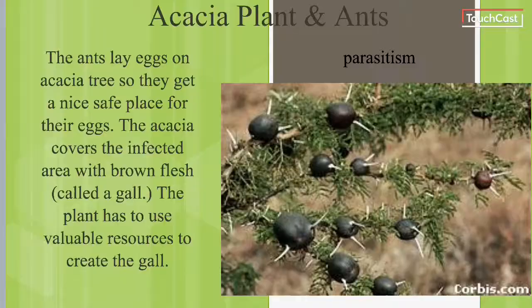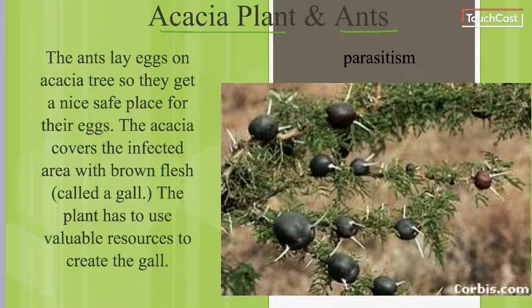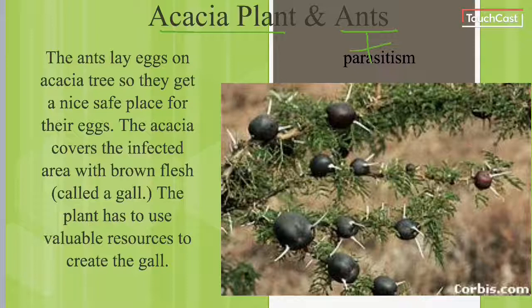Let's look at the acacia plant and ants. The ants lay eggs on the acacia tree, giving them a nice safe place for their eggs — that's the positive for the ant. The acacia covers the infected area with a brown flesh called a gall, and the plant has to use valuable resources to create the gall. That tells us the acacia has a negative — it's using something important, using energy, for the ants to be able to populate.